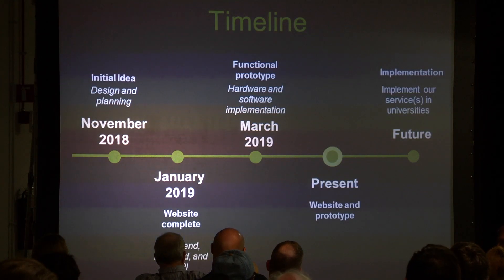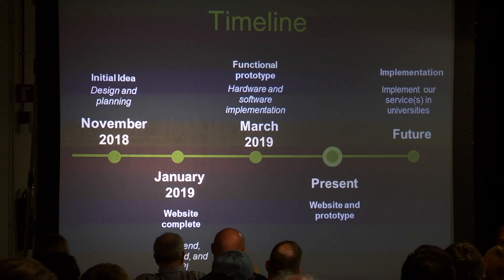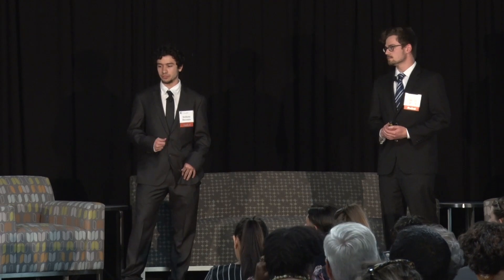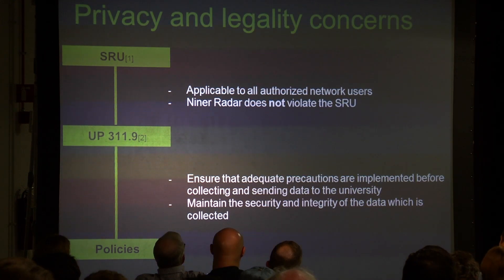And this is what we've done so far. We originally got the idea in November 2018, and then by January 2019, we got the website completed. In March 2019, we got a functional prototype working. Now we're currently implementing the functional prototype with the website. In the future, we want to implement our services in universities. We've checked all of the legality concerns, and we don't violate any of UNC Charlotte's policies.